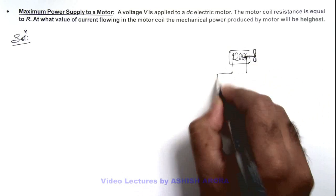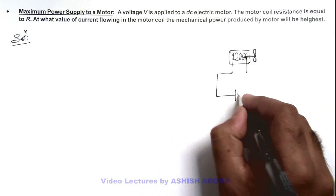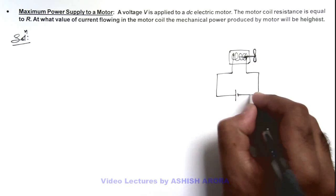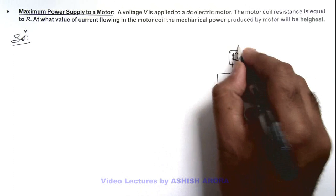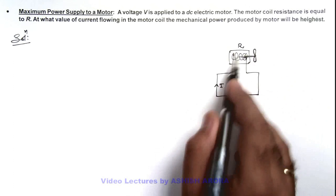In the circuit it is connected across a battery of voltage V through which a current I flows, and the resistance of this coil of motor is R.